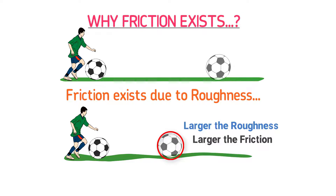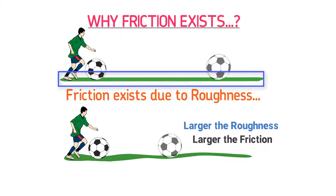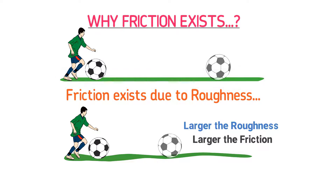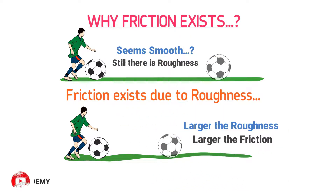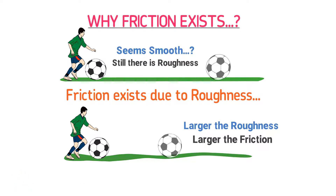You may be thinking there is no roughness in a smooth surface, then why does the football stop? Although the surface seems very smooth, its microscopic description reveals that there is still some sort of roughness. Thus, remember that friction is due to the roughness of the ground or due to the roughness of any surface.